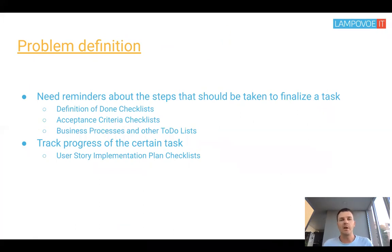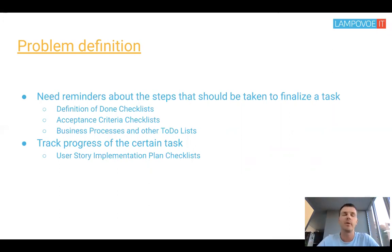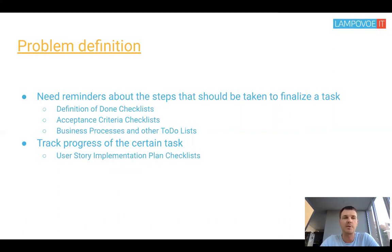There are two types of use cases: a reminder — for example, what I should do in this case — or tracking progress, so how many tasks we've done during the last week, month, or whatever. The cases I can provide include a definition of done checklist, acceptance criteria checklist, business process, other to-do lists, and a user story implementation plan checklist.